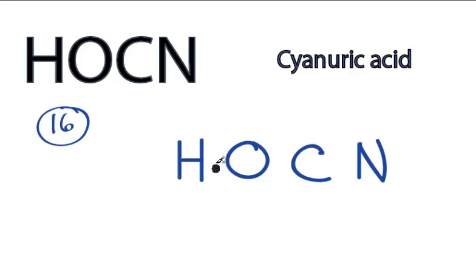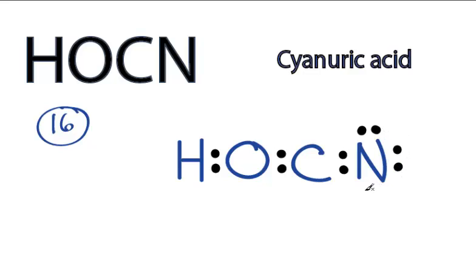We'll take and put two valence electrons between atoms to form chemical bonds. We've used six valence electrons. Complete the octet for nitrogen — 8, 10, 12 — let's go back to the oxygen — 14 and 16. So we've used all our valence electrons.